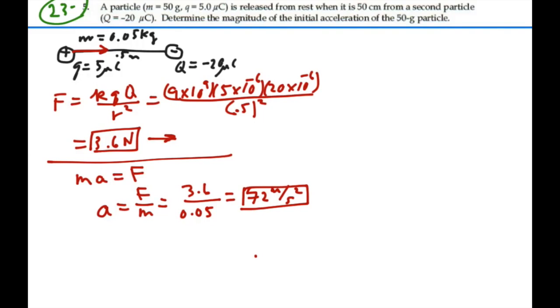So that is our initial acceleration of the particle. We ignore gravity, that force would be way too small. And we actually weren't given the mass of the second particle, so we wouldn't be able to figure it out anyway.